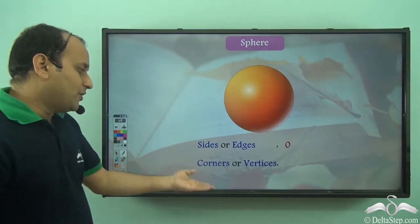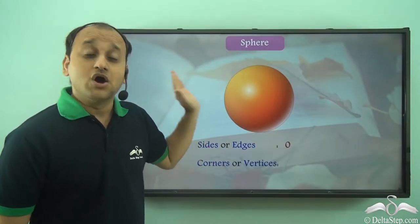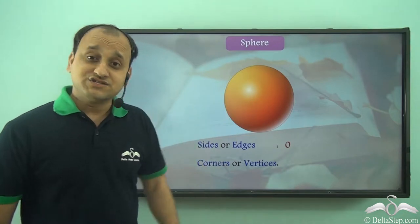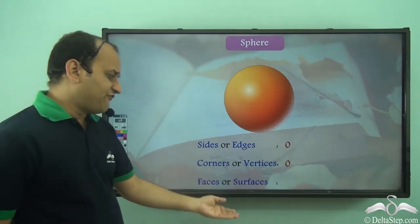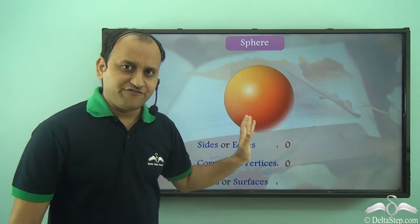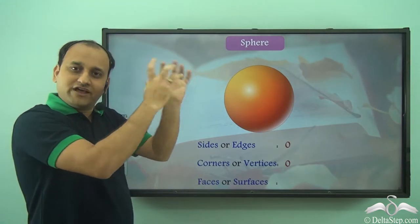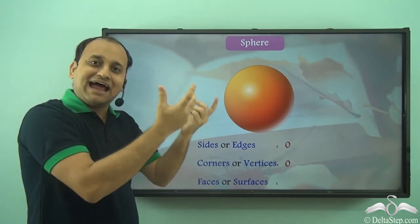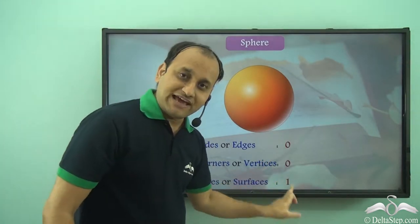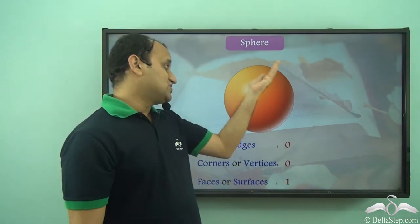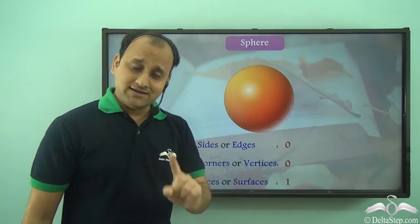What about corners or vertices? As we discussed, there are no corners or vertices in the case of a sphere — zero corners or vertices. What about faces or surfaces? We definitely have one face. Wherever you rotate, you will find that one face of the sphere. So the sphere has one face or surface. In the case of sphere, we have zero edges, zero vertices, and one surface.